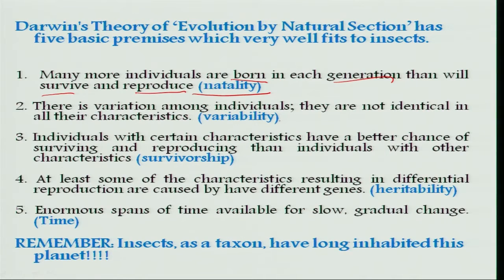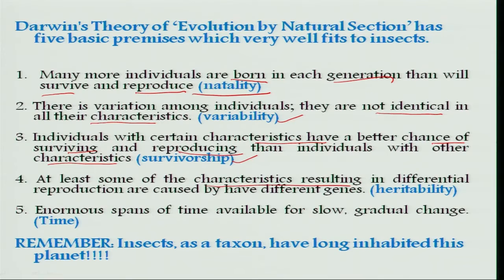Insects are highly variable because each individual will have variable characters not identical to other individuals. Insects also have very high survivorship — individuals with certain characteristics have a better chance of survival and reproduction compared to others. Some of these characters are quite heritable, meaning they are transferred to the next generation and stay with that generation. Importantly, insects have time at their advantage, as they originated long ago, allowing for a slow and steady evolutionary process.